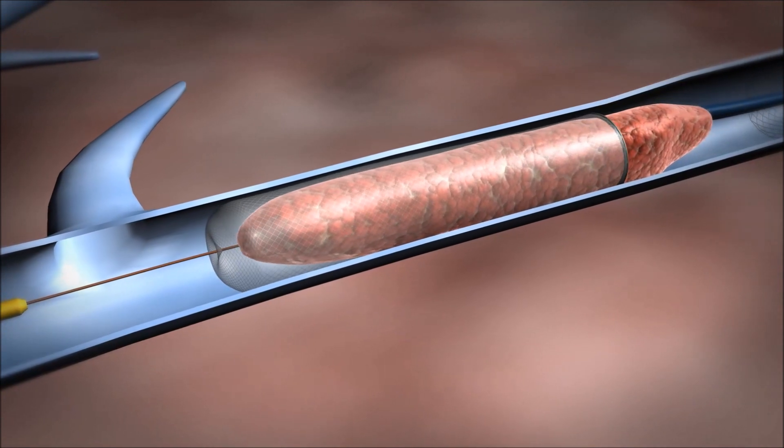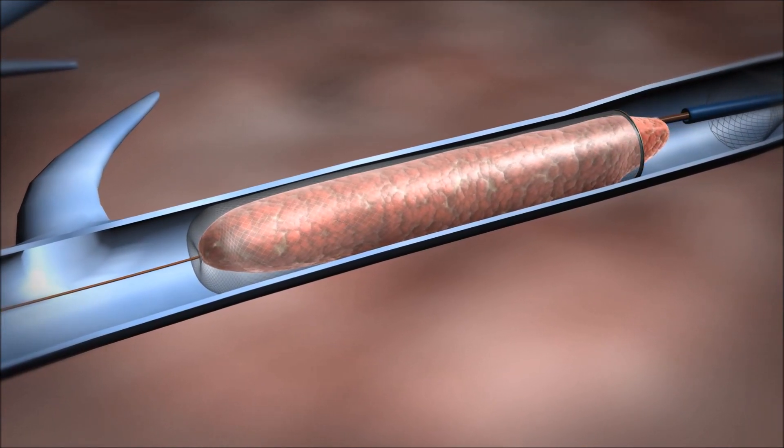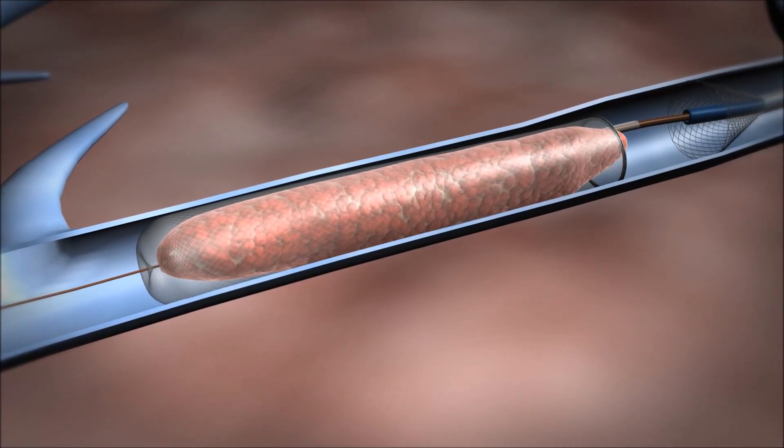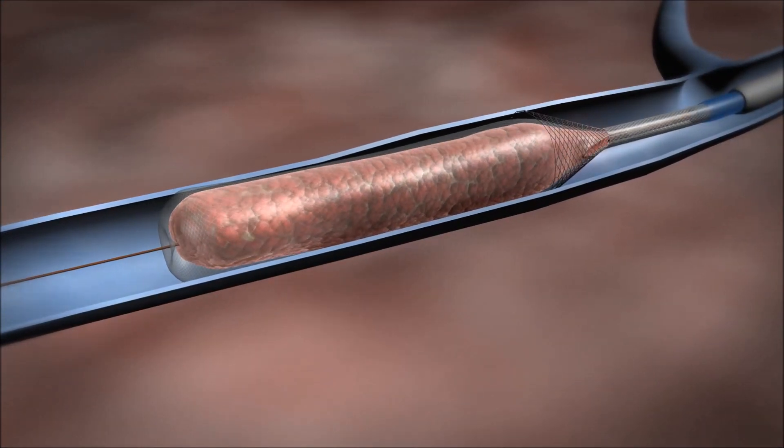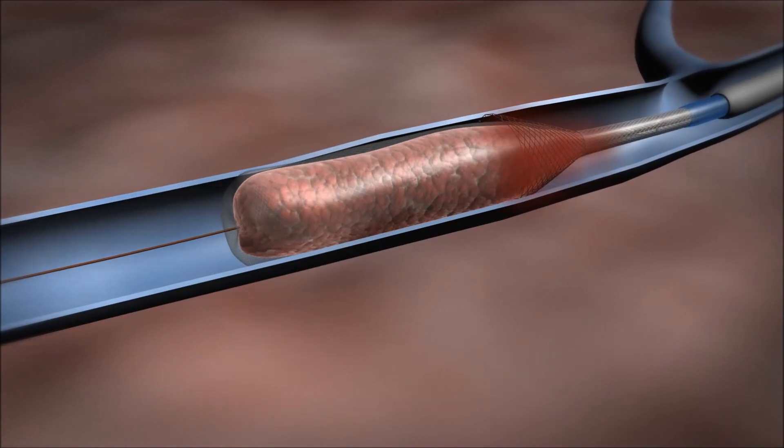As the delivery catheter is retracted, the self-expanding dynamic lengthening mechanism extends the basket to encapsulate and capture the clot in a smooth motion. Once the clot is contained inside the basket, it is retracted into the funnel catheter.